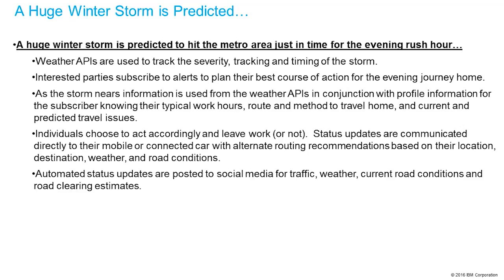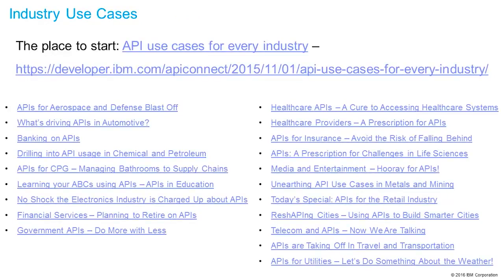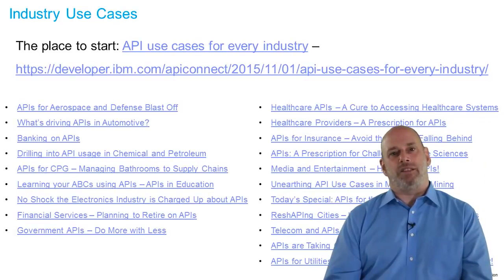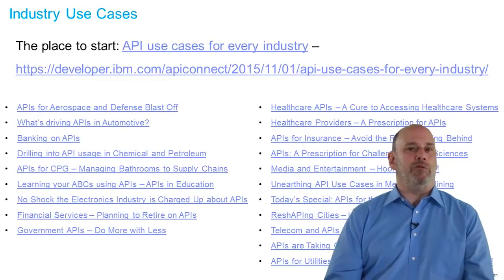I've written lots of blogs on this topic. The best place to start is the URL at the top of this page — a blog I've written on API use cases for every industry. Starting there gives you good recommendations that apply across industries, including looking at what other industries are doing. That blog will link to 20 different industry-specific blogs I've written with use cases in the six categories mentioned earlier, so you can get sample use cases in your specific industry and maybe some advanced scenarios as well. This is a very hot topic — one of the things businesses really need to think about as they move into the API economy. Hopefully these blogs and this video will help you move forward successfully.